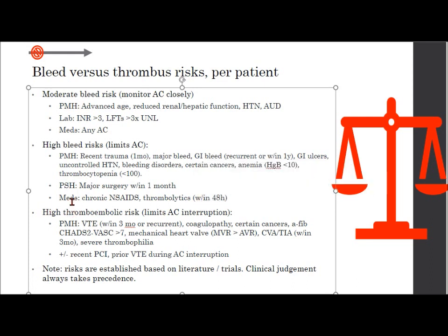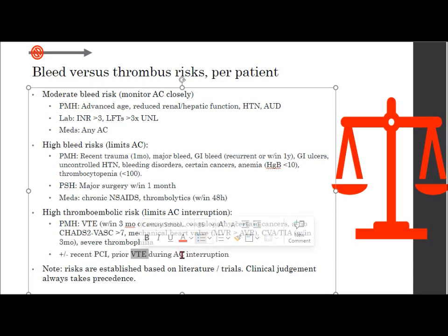A high thromboembolic risk is on the opposite side — this limits anticoagulation interruption. These are patients with a history of thromboembolism within three months or recurrent thromboembolism, coagulopathy, certain cancers, AFib with a CHADS-VASc score greater than 7, mechanical heart valves (MVR greater than AVR — the mitral valve is the higher risk one), prior stroke or TIA within three months, severe thrombophilia, recent PCI or stent, or a prior thromboembolism during interruption of anticoagulation.